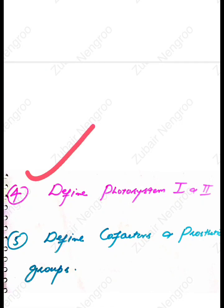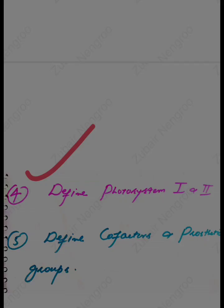The fourth question is: define photosystem I and photosystem II. Question number five is: define cofactors and prosthetic group — what is a cofactor and what is a prosthetic group? It is a very easy and good question.